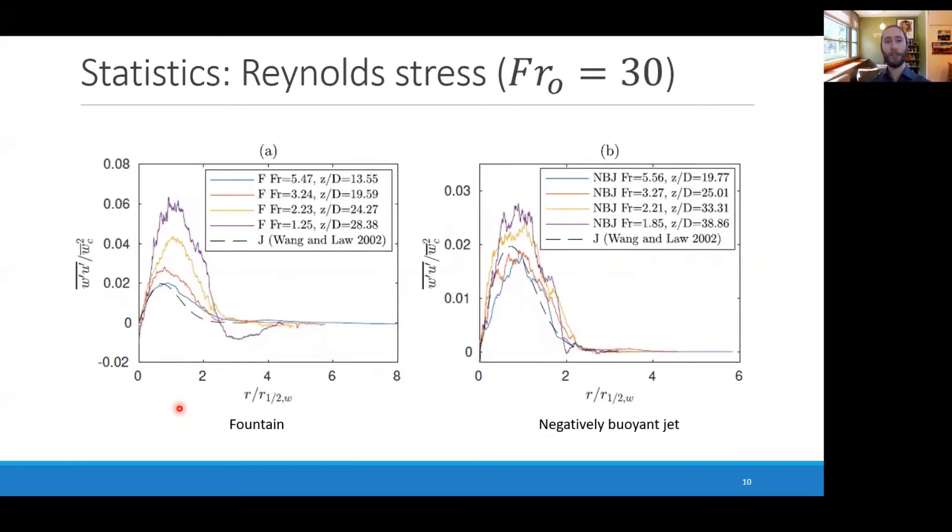The Reynolds stress, however, we see something a little bit more interesting, where in both cases for the fountain and negatively buoyant jet, we see there is a systematic increase in this profile with axial distance. That is, the Reynolds stress normalized by the centerline velocity squared is increasing up the jet or up the fountain. This is not a result of the actual turbulence production increasing. Rather, it's because the mean flow is decreasing, and so this quantity increases.